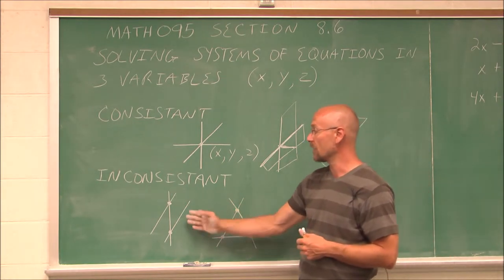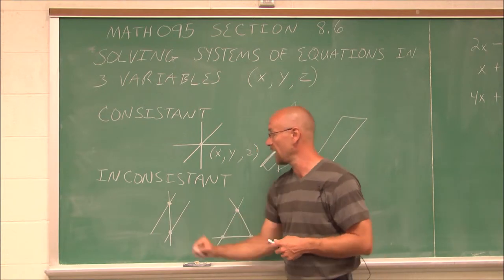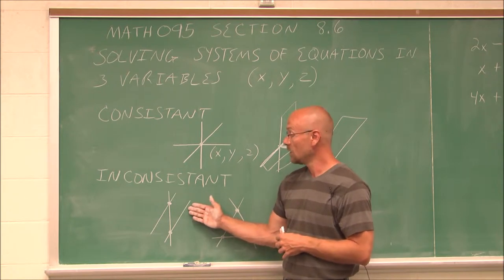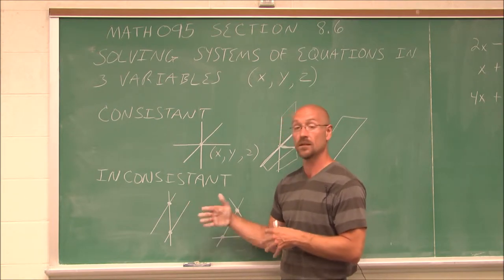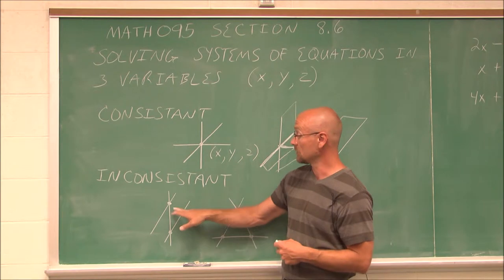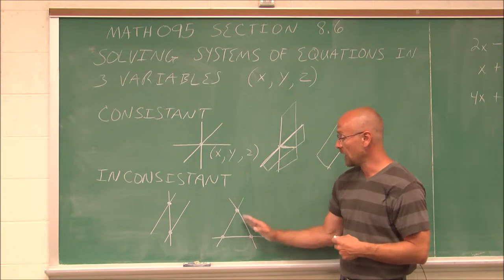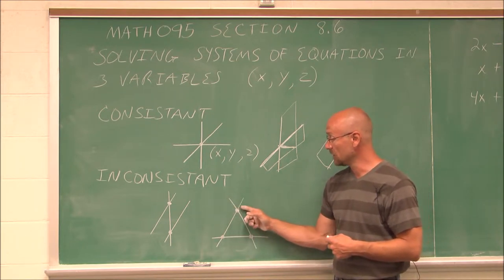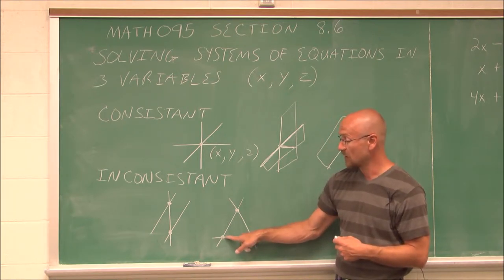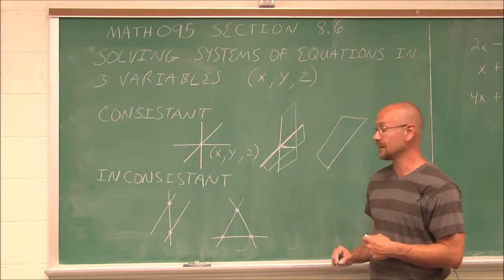For inconsistent systems, if two planes are parallel, they will never intersect, which means we won't find a single solution or infinite solutions — there is no solution that solves this system. Sometimes planes intersect each other pairwise, but there is not one place where all three planes intersect together. That's what we define as inconsistent.